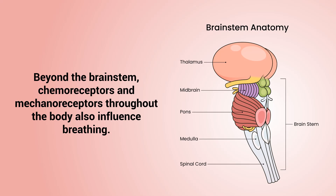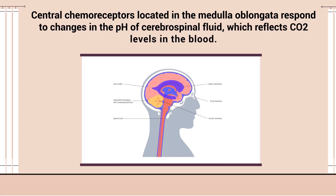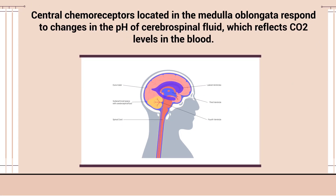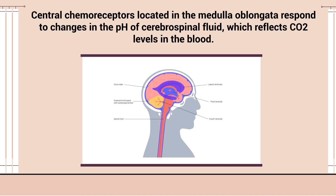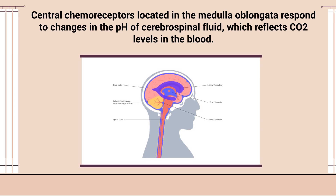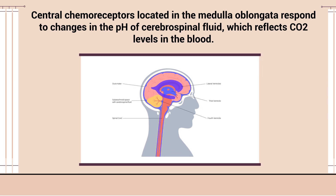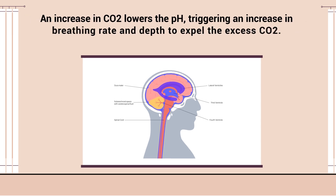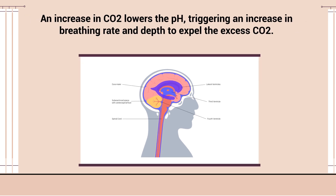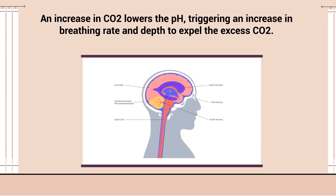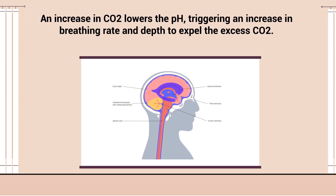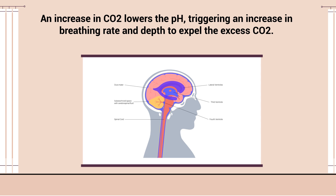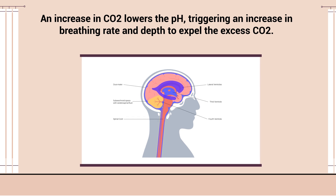Beyond the brainstem, chemoreceptors and mechanoreceptors throughout the body also influence breathing. Central chemoreceptors, located in the medulla oblongata, respond to changes in the pH of cerebrospinal fluid, which reflects CO2 levels in the blood. An increase in CO2 lowers the pH, triggering an increase in breathing rate and depth to expel the excess CO2.